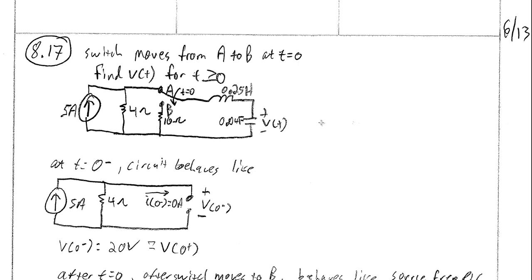As usual we want to start out and figure out our initial conditions — what's going on when the circuit was in steady state just prior to the switch changing. At t equals 0 minus, we have our current source and 4 ohm resistor. The 10 ohm resistor is just hanging out and has no relevance, so we'll leave that out. The inductor at steady state behaves like a short, and the capacitor at steady state behaves like an open. Therefore at t equals 0 minus, we have no current flowing through the inductor because it's in series with the capacitor that's behaving like an open circuit.